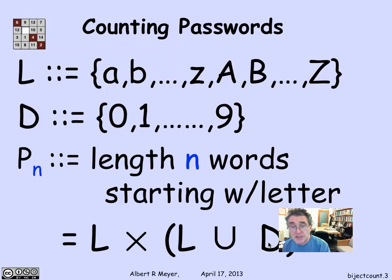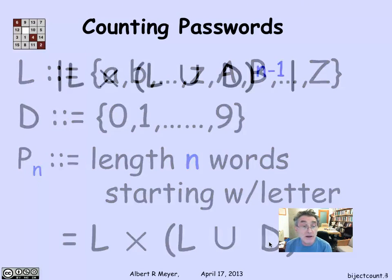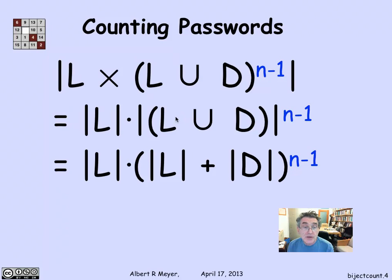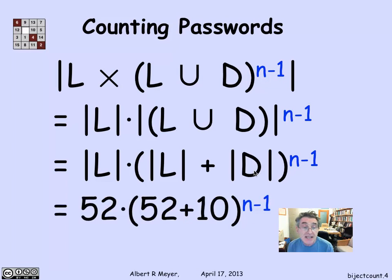Now we have an easy way to count this, because the size of this product, by the product rule, is the size of L times the size of L union D to the n minus first power. And of course, L union D, since letters and digits don't overlap, by the sum rule, the size of them is just L plus D. So I get this nice formula, that it's 52 letters times 52 letters plus 10 digits raised to the n minus first power.